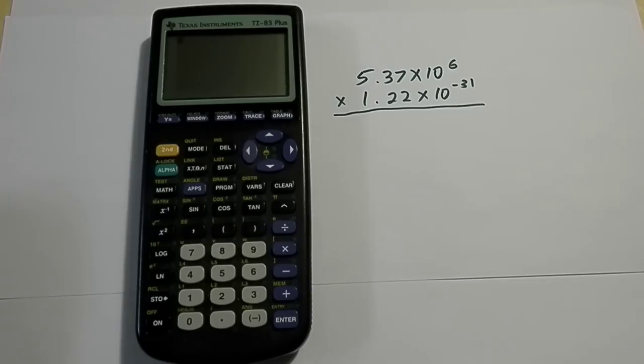So in this particular example, I'm going to show you how to enter in 5.37 times 10 to the 6 multiplied by 1.22 times 10 to the negative 31.